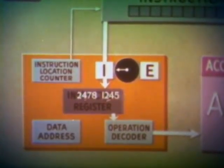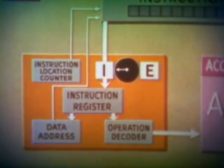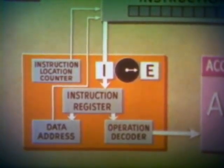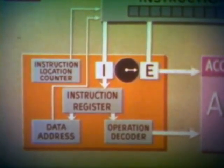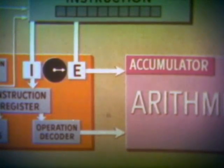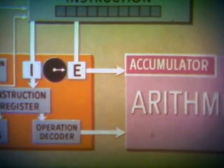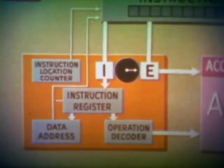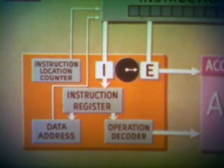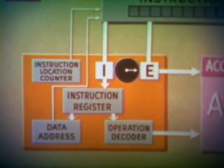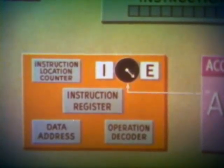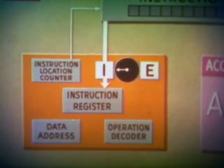The data address part of the instruction is placed in a register connected to storage. The instruction register then causes a switchover to execution time. This time begins with the transfer from storage of the data at the given addresses into the arithmetic unit. The computation is done, and the result is stored in the accumulator as instructed. During this time, the instruction register causes the instruction location counter to advance one count, so that it will contain the location of the next instruction word. When the operation is completed, the arithmetic unit causes switchover to instruction time, and the entire cycle is now repeated.